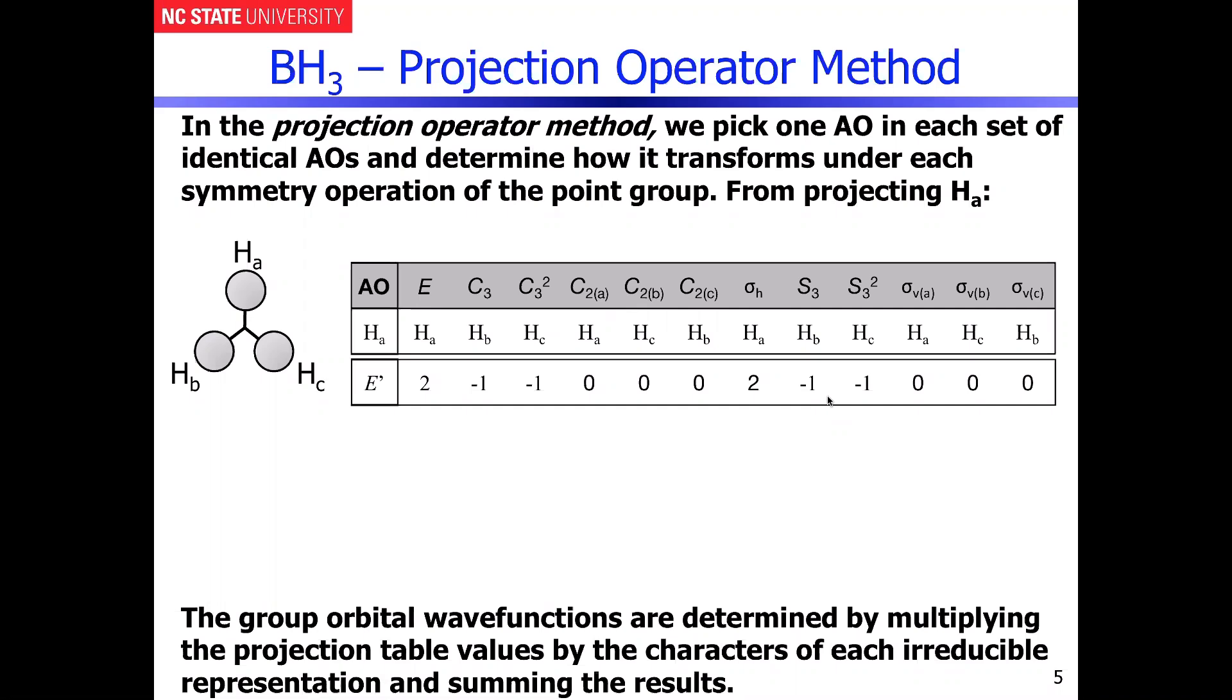This was already derived earlier. Those projections of HA throughout all of the operations in the series now need to be multiplied by the second irrep that we determined was the symmetry of the group orbital, and in this particular case, it's E prime.